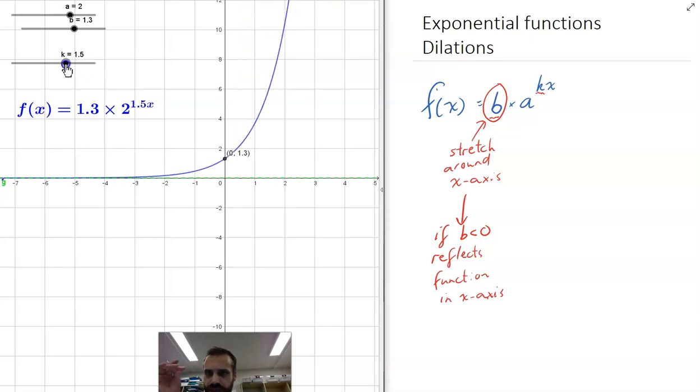And if we stretch it back out, you can see as the k value gets smaller, it gets further and further away, stretching further and further away from the x-axis.